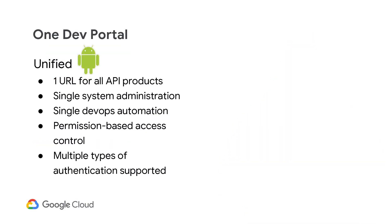One unified developer portal represents a one-stop shop for all of your API products, making it really easy for developers to discover what API products you have available. From a maintenance and support standpoint, you only have one place for system administration, for DevOps administration, and you can target a single pipeline, simplifying deployment of new API products.